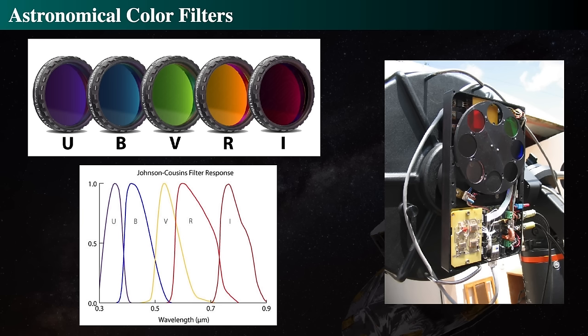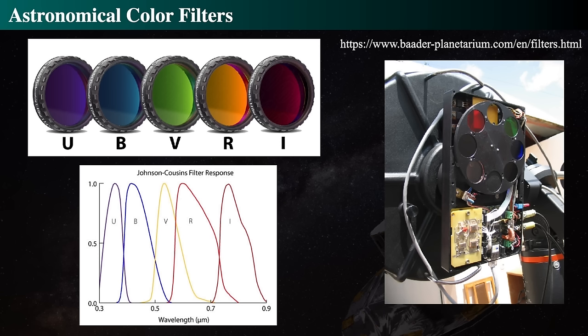We can't easily measure the total energy coming off a star, nor easily measure stellar radii directly. On the back of a telescope, you can put filters. We use a standard filter set called the Johnson-Cousins filters, which have been around for a long time. These are standard astronomical filters — including the Baader photometric R filter. The transmission curve shows the wavelength range each filter passes. Filters simply screw on and you send the light through into your detector, like a camera.